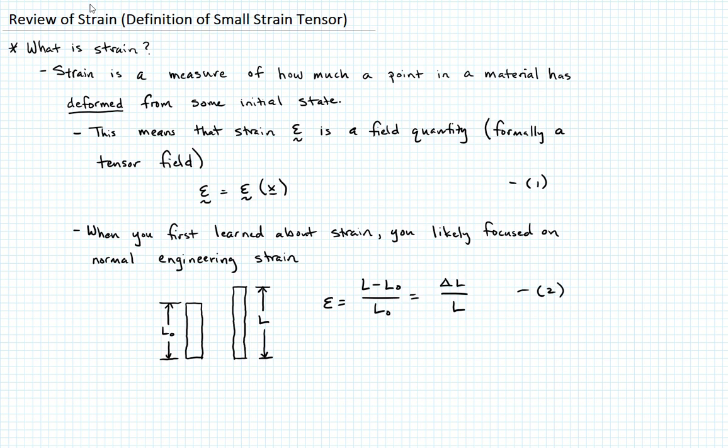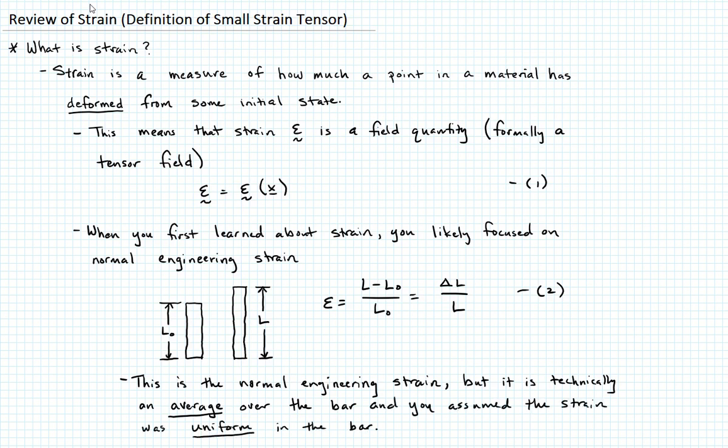But a couple things. It's technically an average over the bar. And the reason that you don't usually even talk about it being an average is because you assumed that the strain was uniform in the bar. Nothing wrong with any of that definition. That works for a lot of cases. As you probably know by this stage in your career, strain doesn't have to be uniform. It can be non-uniform so that it becomes somewhat difficult to figure out if the average strain is actually a meaningful quantity. And many times it's not. But what we want to do is now add a little sophistication to that definition.